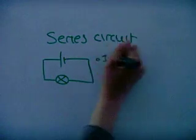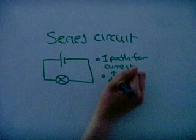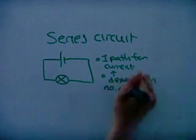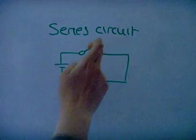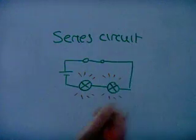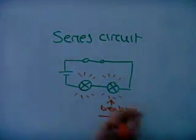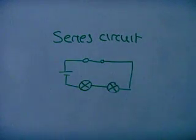In a series circuit, there is only one path for the current to flow and it is the same everywhere. It depends on the number and nature of the components. Also, one switch controls the whole circuit. If one component breaks, there will be a break in the entire circuit; therefore, all components will be affected.